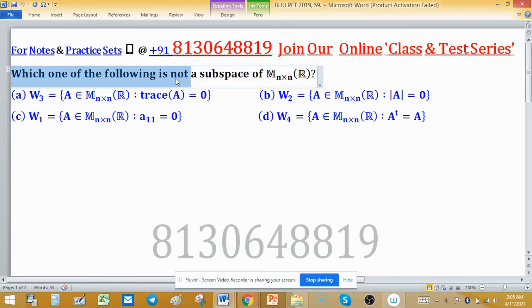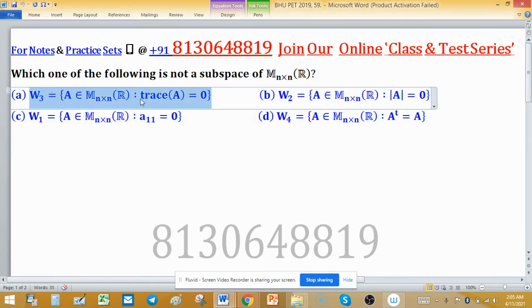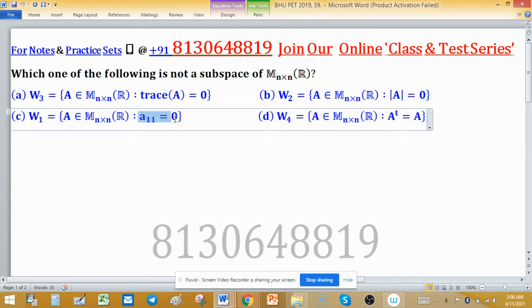Which one of the following is not a subspace of square matrices over ℝ? Four options are given: W₁ is the set where the first element is zero, W₂ is the set where determinant of A is zero, W₃ is the set where trace of A is zero, and W₄ is the set where transpose of the matrix is the same as the given matrix.